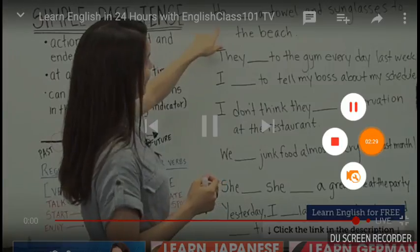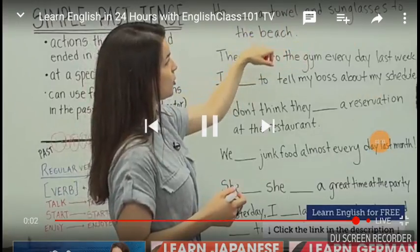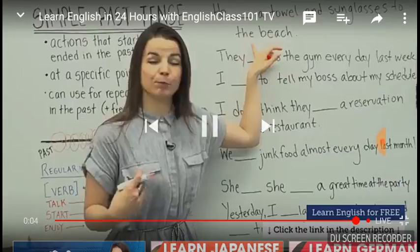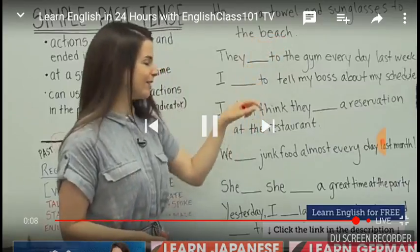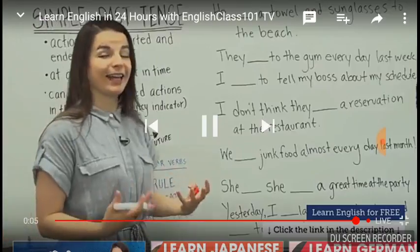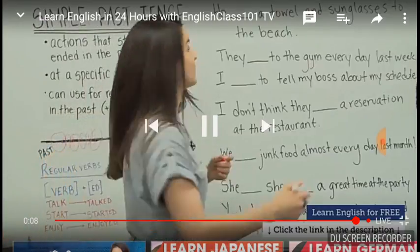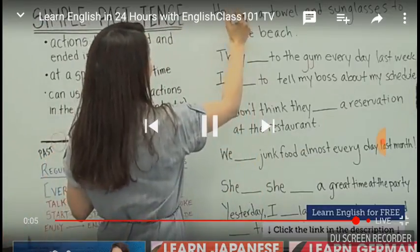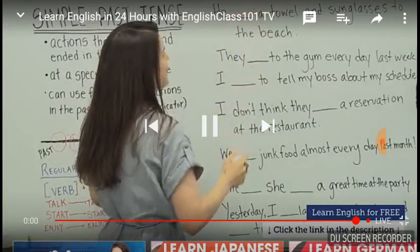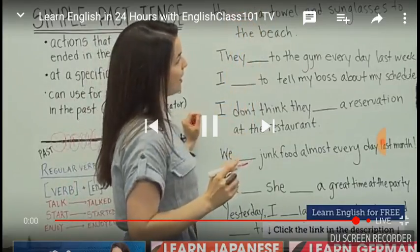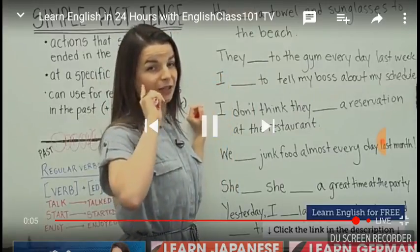Okay, first sentence: 'He ___ a towel and sunglasses to the beach.' The verb here is 'bring.' I want to use the verb 'bring.' However, 'bring' is an irregular verb, so I can't use the -ed rule for regular verbs. The correct conjugation is 'brought' — B-R-O-U-G-H-T. 'He brought a towel and sunglasses to the beach.' This is the correct conjugation here — 'bring' is an irregular verb.